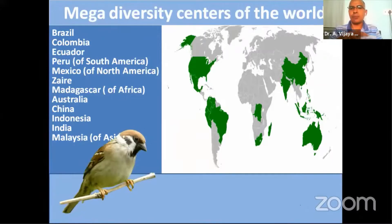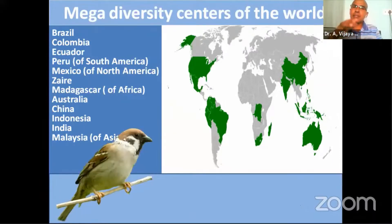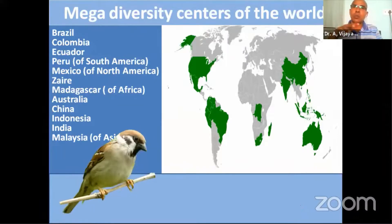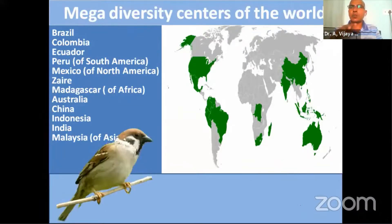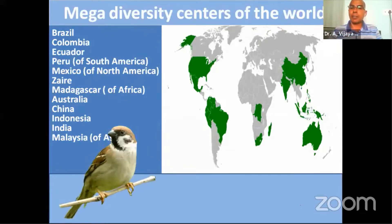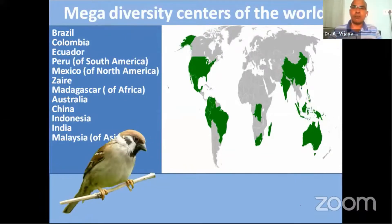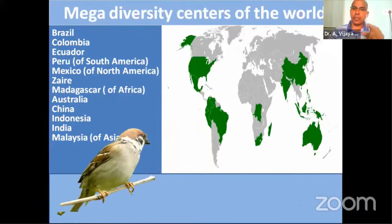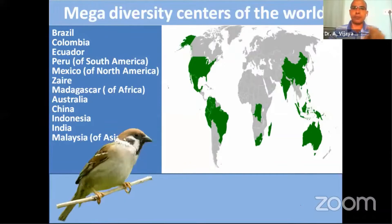If there is any disturbance in these areas, these biodiversity centers lose their diversity and lose their ecosystem services. The present situation is not in favor of nature or diversity — human destruction is ongoing, and a huge number of species are being lost every year from these areas.